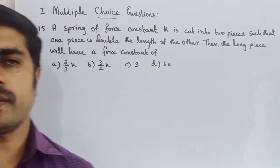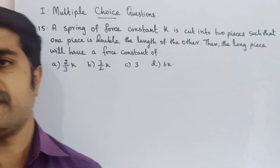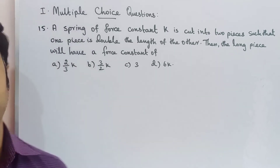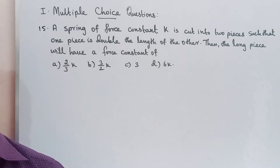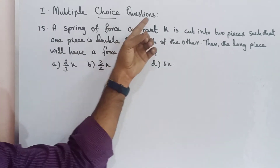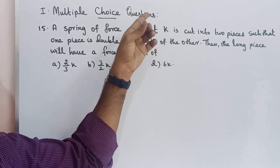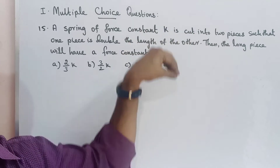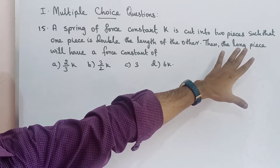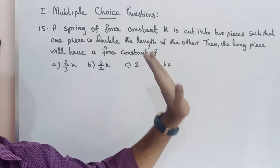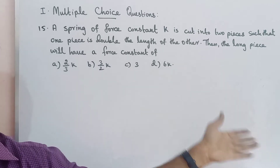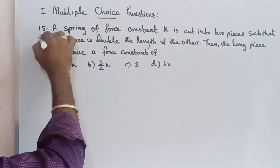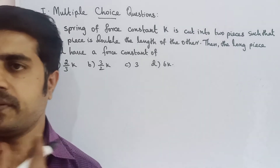Hi students, this is 11th Physics 4th Unit - Work, Energy and Power. In this unit, there is one question in the book back MCQ - Multiple Choice Questions. This is for government school and matriculation school students. This is the textbook for Tamil Medium and English Medium. You will follow pages 13th, 14th, and 15th.